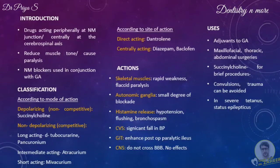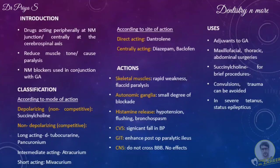The neuromuscular blocking agents, or the peripherally acting muscle relaxants, are used in conjunction with general anesthetics to provide muscle relaxation for surgery. While the centrally acting muscle relaxants are used primarily for painful muscle spasms and spastic neurological diseases.